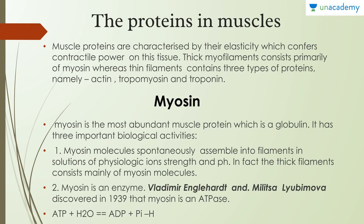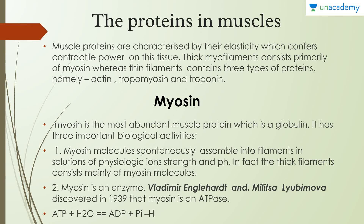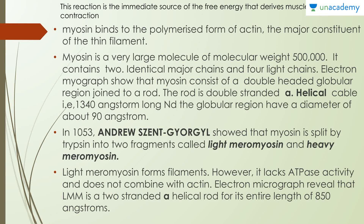Myosin is the most abundant muscle protein — it is a globulin with three important biological properties. First, it spontaneously assembles into filaments in solutions of physiologic ionic strength and pH, and the thick filaments consist mainly of myosin molecules. Second, myosin acts as an enzyme: Engelhardt and Lyubimova discovered in 1939 that myosin is an ATPase, catalyzing the conversion of ATP to ADP, which is the immediate source of free energy that drives muscle contraction.